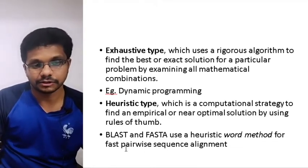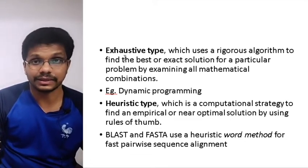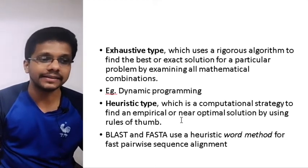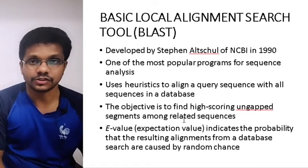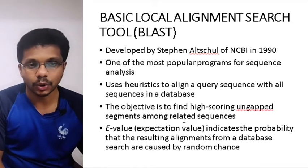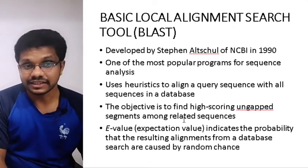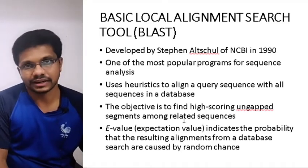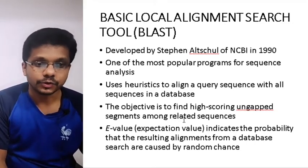FASTA uses the word method, which is a subtype of the heuristic approach. The heuristic method is better in terms of speed and sensitivity, while the exhaustive method gives exact results but takes a long time. Most algorithms and databases use heuristic-type algorithms to aid similarity searching. One of the most commonly used tools is called BLAST, which stands for Basic Local Alignment Search Tool — a tool for local alignment developed at NCBI in 1990.